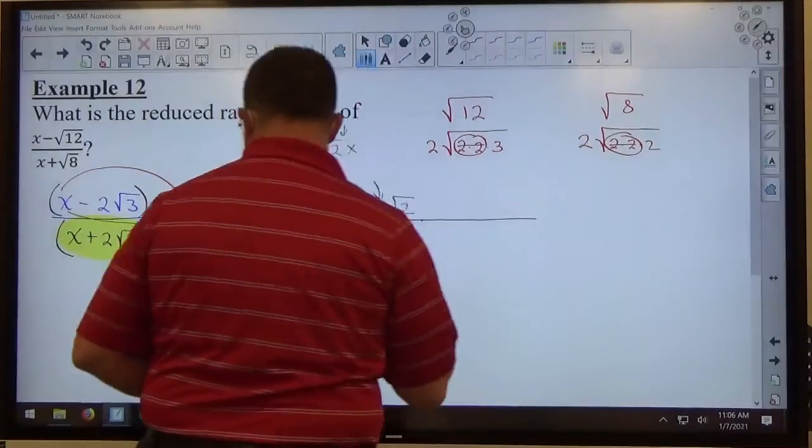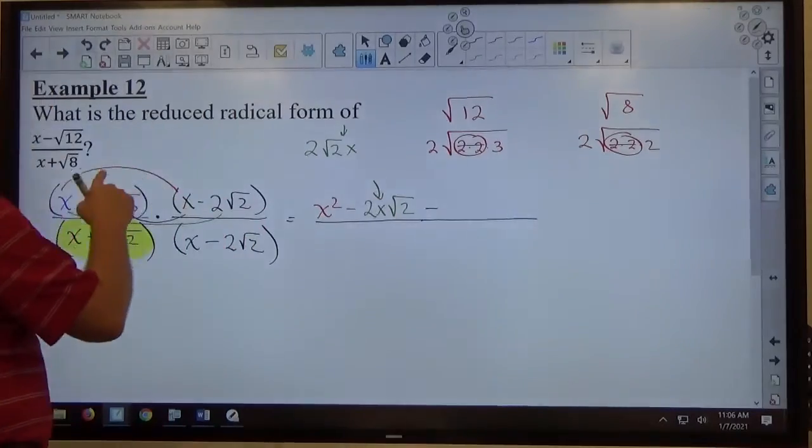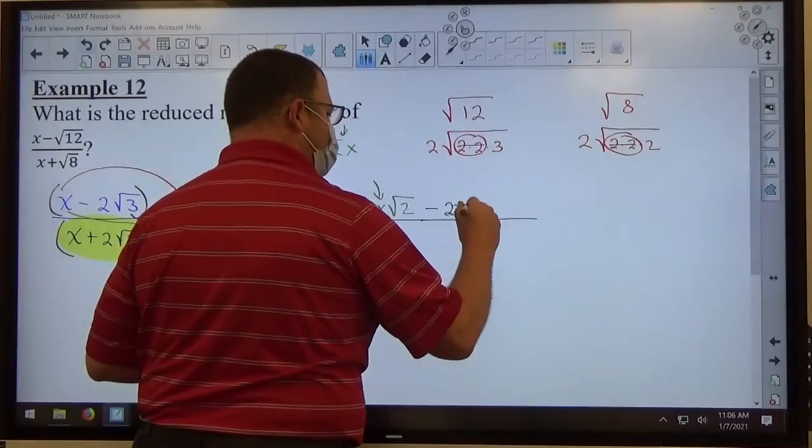Next object, if I do inner times inner, I've got a negative times a positive, so negative, and I've got a 2 square root of 3 times x, which is 2x times the square root of 3.